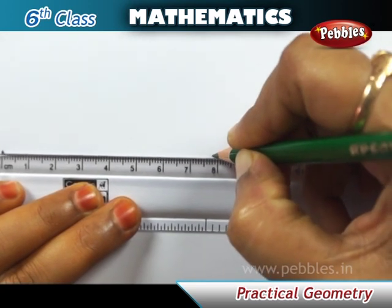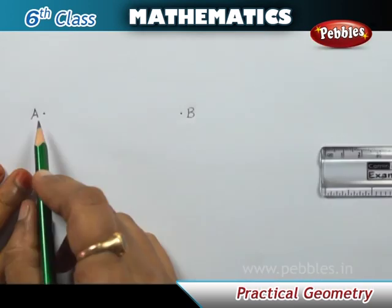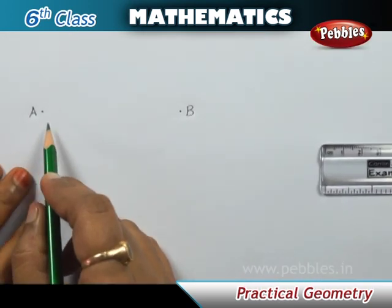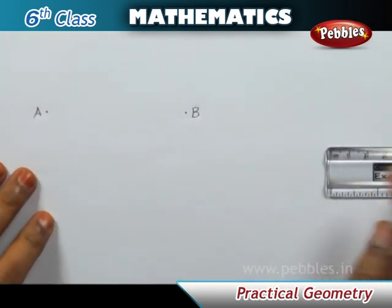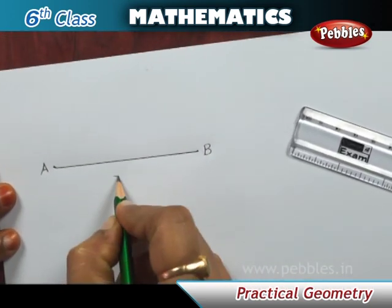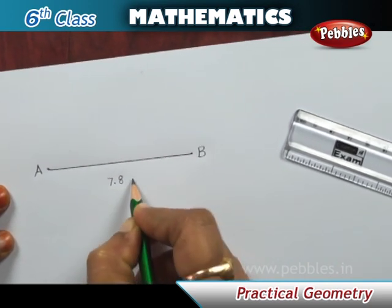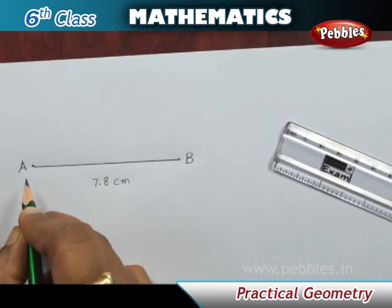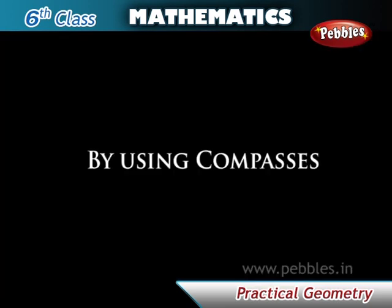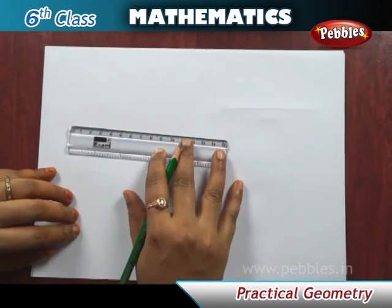Name this second point B. Join points A and B along the edge of the ruler. AB is the required line segment of length 7.8 centimeters. Now let us see the second method — by using compasses. Suppose we want to draw a line segment of length 5.3 centimeters.